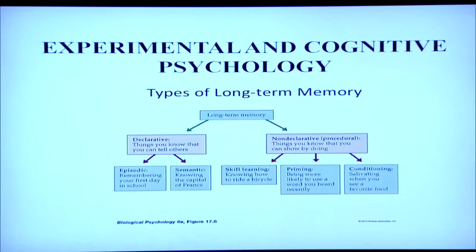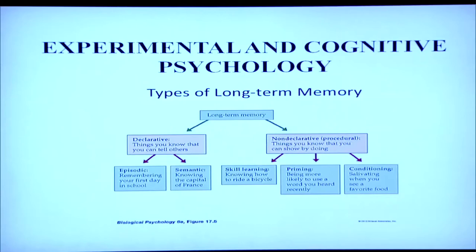This diagram shows a flow chart for types of long-term memory, in order to explain that cognitive psychology tries to understand different processes experimentally — for example, how we process information and how we store information in our mind.